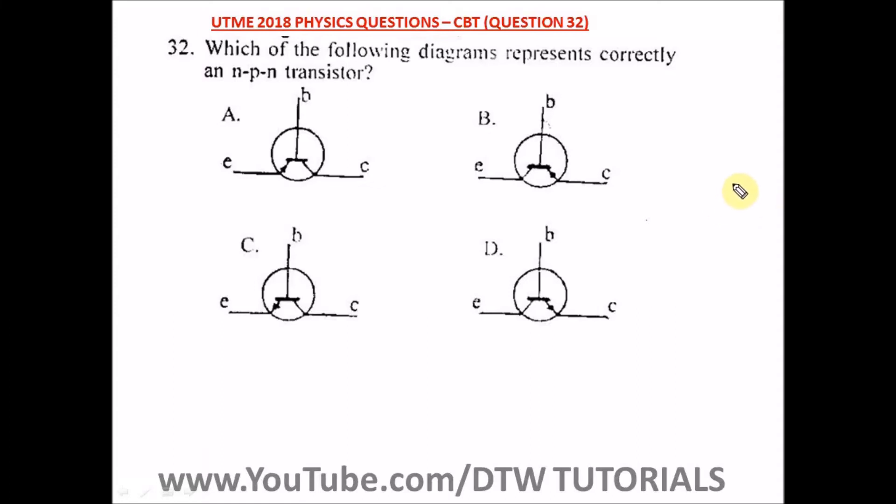Question 32 of the UTME 2018 physics past question. It says which of the following diagrams represent correctly an n-p-n transistor? So option A says this, B says this, C says this.